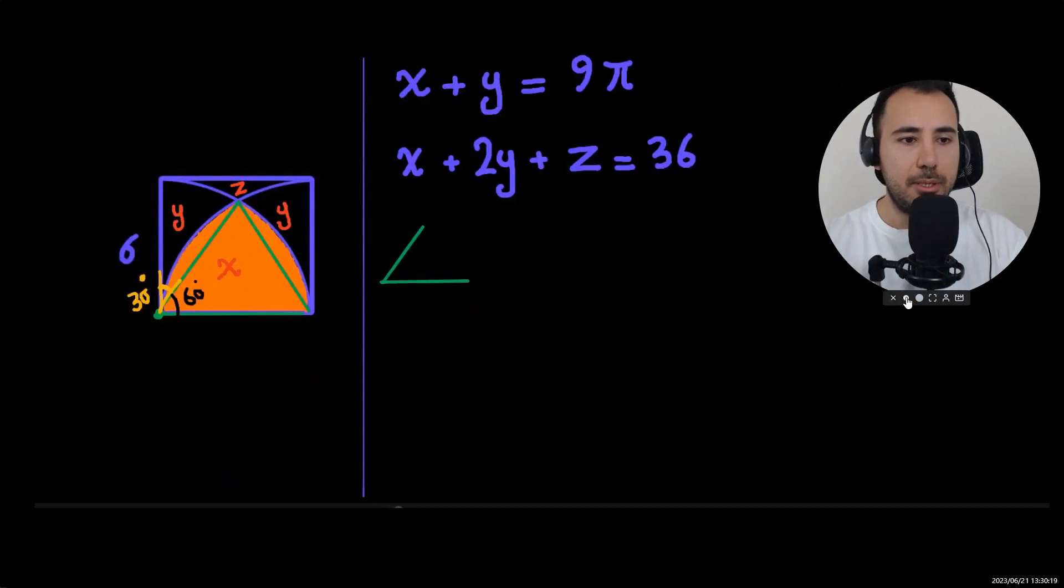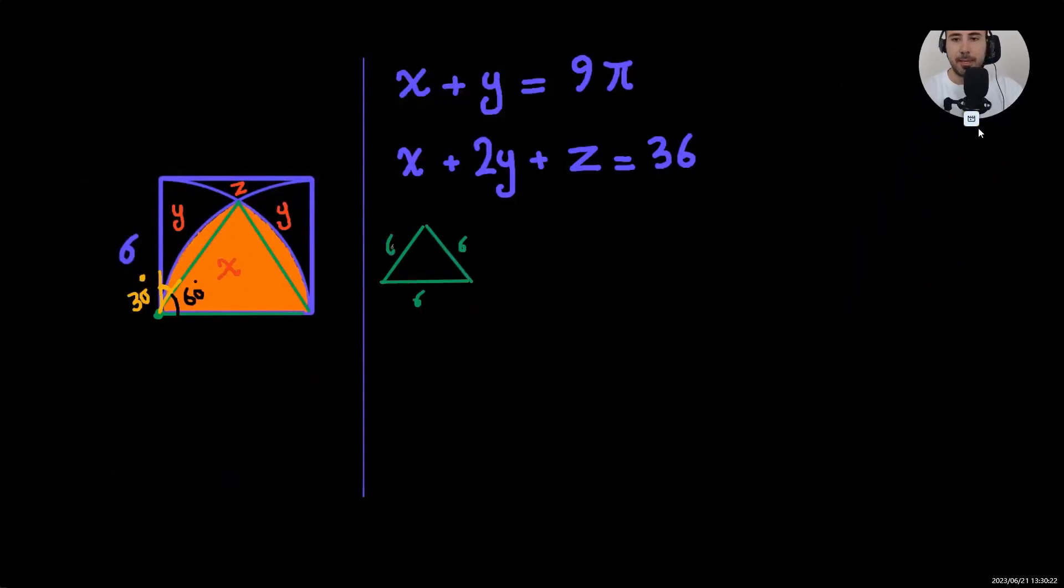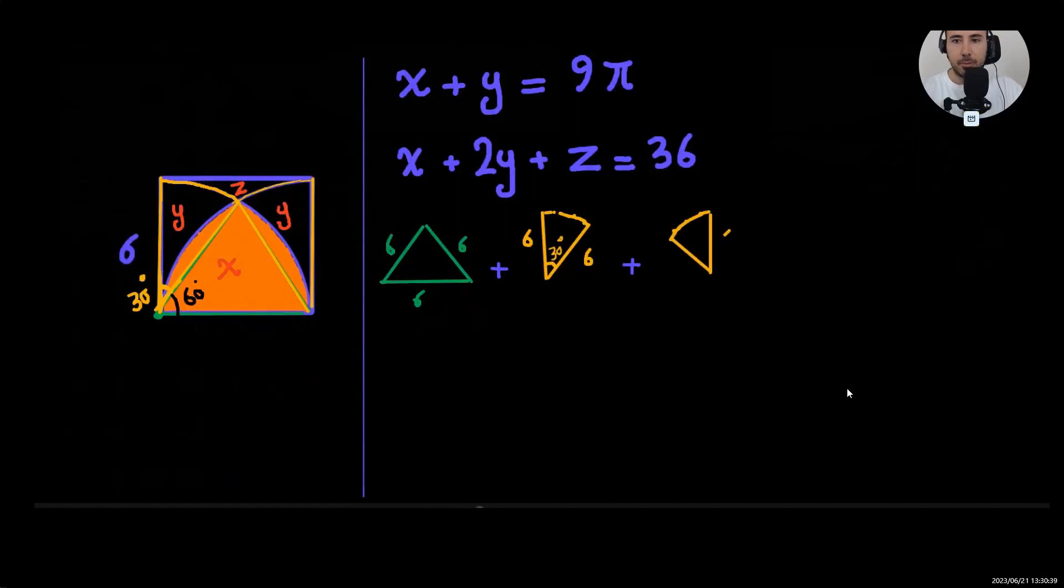Now I'm going to write the final equation. The area of this equilateral triangle plus this shape like a pizza slice and again another one like this—remember these are not the same as y, right? These are different shapes. But we know that each one has 30 degrees. And finally, plus z is again the square, which was 36.